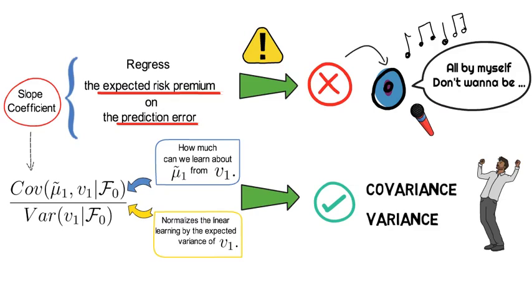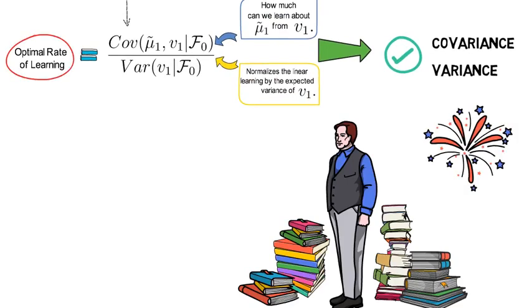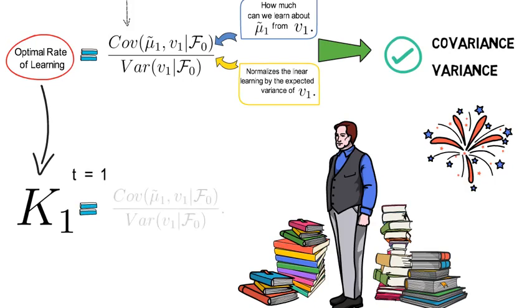Now let's continue. As a sign of appreciation and respect for Kalman's work, the optimal learning rate is usually abbreviated with the letter K. So in summary, the optimal learning rate at time t equals 1 equals K_1, which coincides with the ratio of the covariance over the variance term.